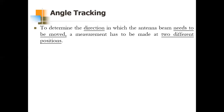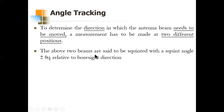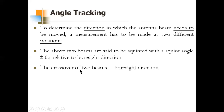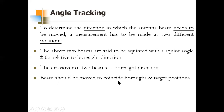To summarize the angle tracking concept: to determine the direction in which the beam needs to be moved, measurements must be made in two different positions, Aa and Ab. The two beams are squinted with squint angle ±θq relative to boresight direction θ₀, which is the crossover between beams A and B. The beam must be moved so that boresight coincides with the target position — θ₀ should equal θt.